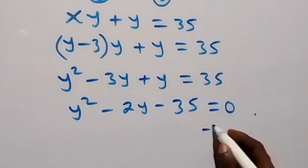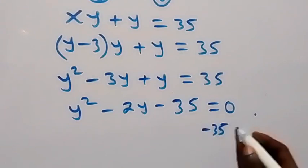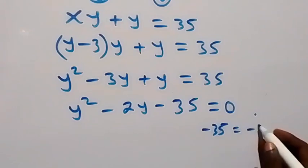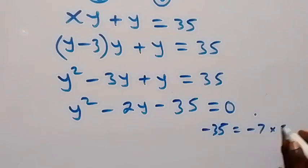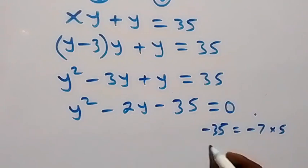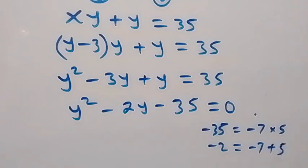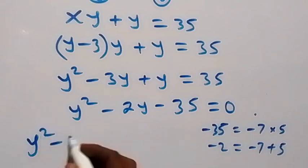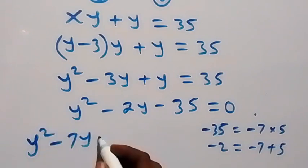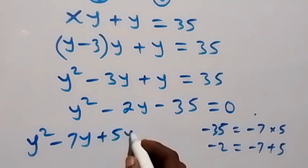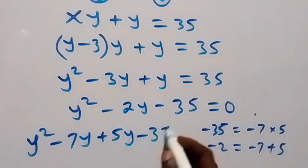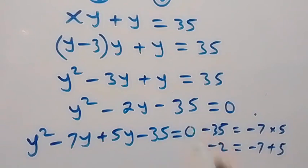The product here is minus 35, same as minus 7 times 5. And the sum, which is minus 2, is also minus 7 plus 5. This becomes y squared minus 7y plus 5y minus 35 equals to 0.